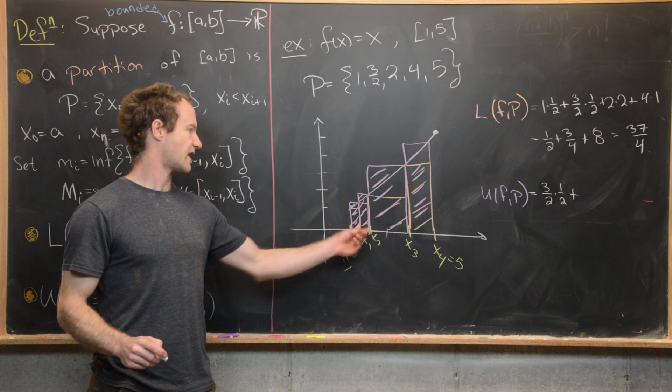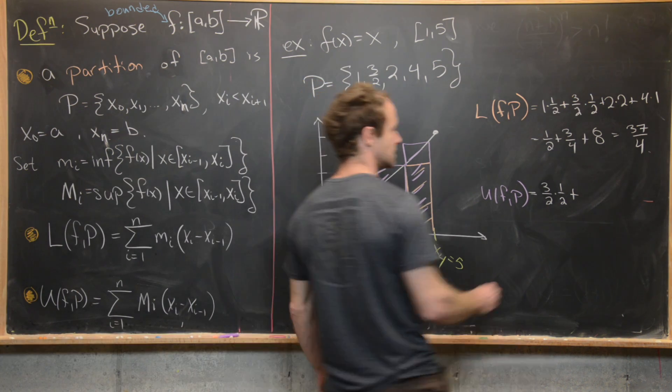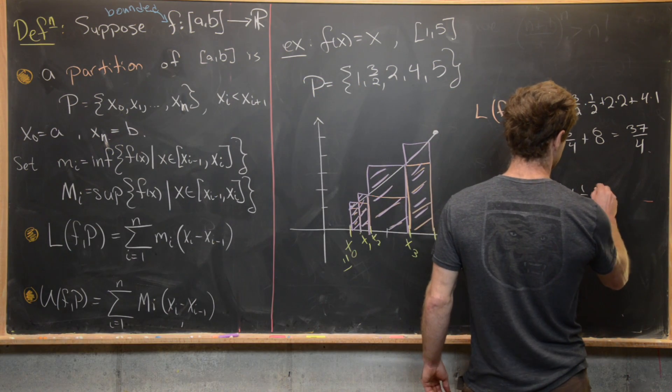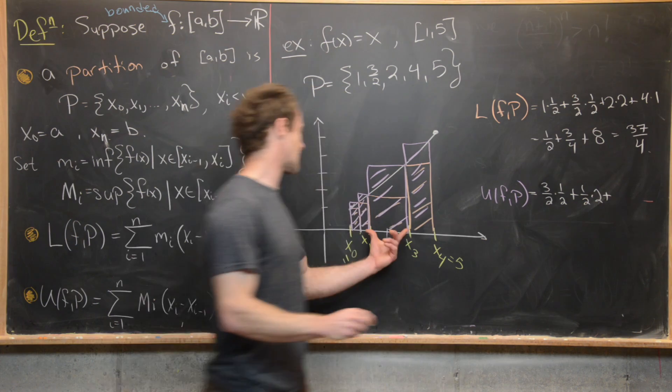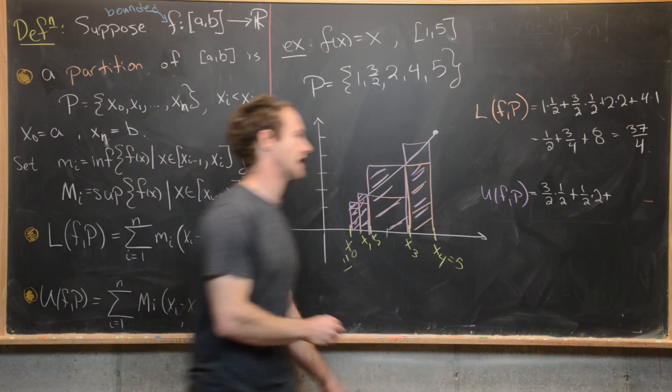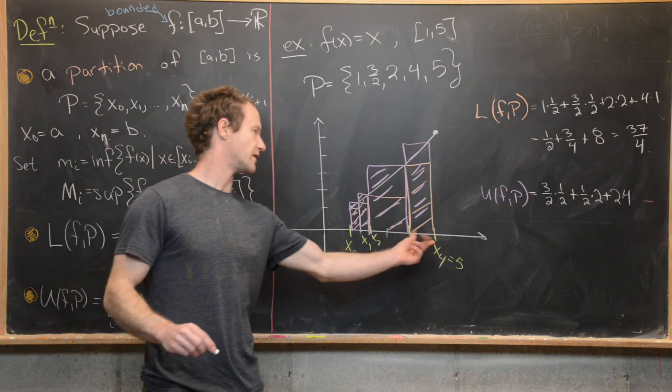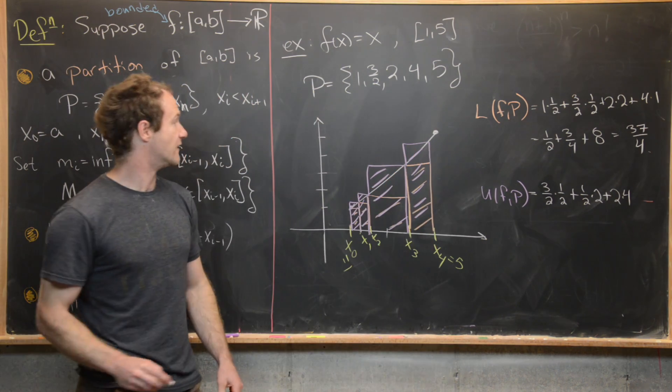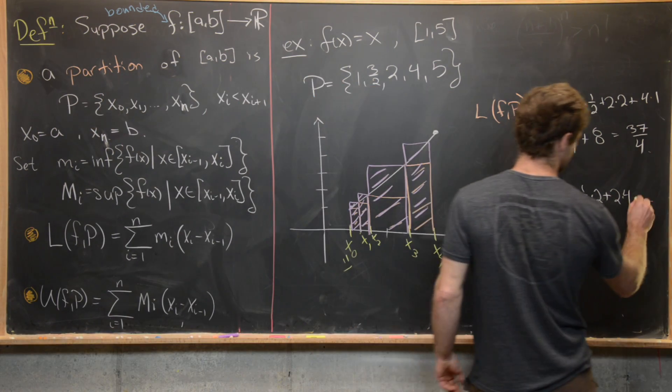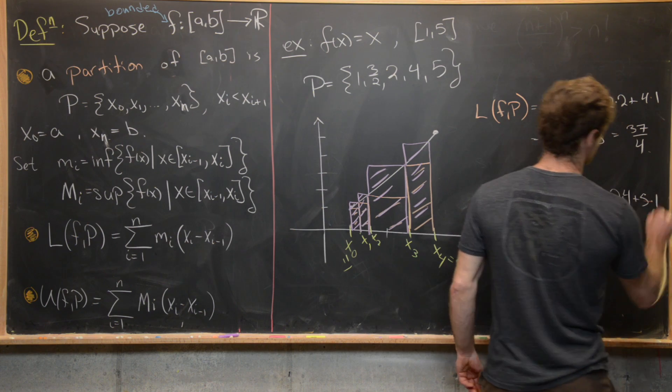This next one has width 2 and height 4. So that's plus 2 times 4. And then finally, this last one has width 1 and height of 5. Again, my scale is not perfect, but we have 5 times 1 over here.